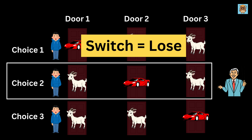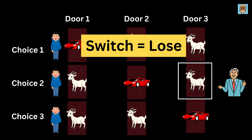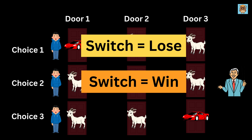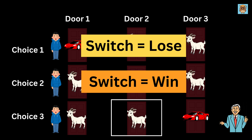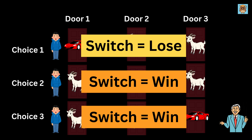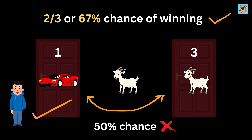In game 2, the host is left with no choice and he has to open door 3, and thus we will win the car on switching the door. Similarly, in game 3, again the host is left with no choice and he has to open door 2, and thus we will win the car on switching the door. That's 2 wins out of 3, which is nearly 67%, and not a simple 50-50 guess, and therefore this problem is counterintuitive.